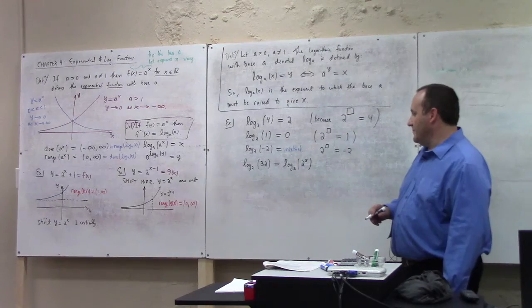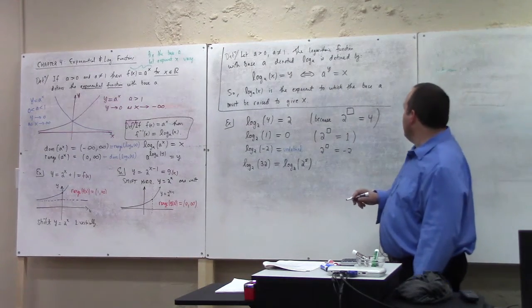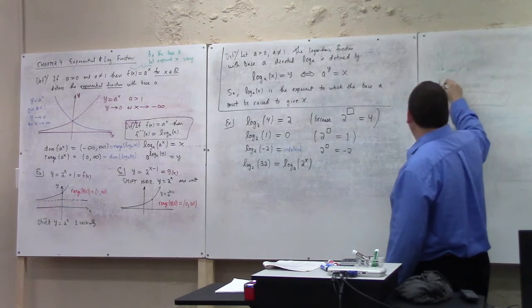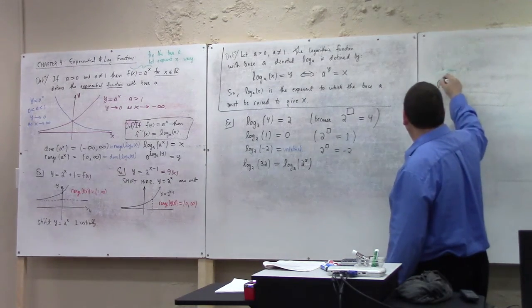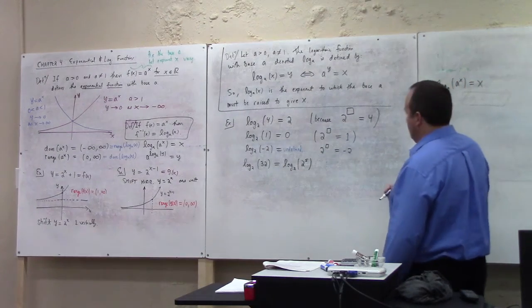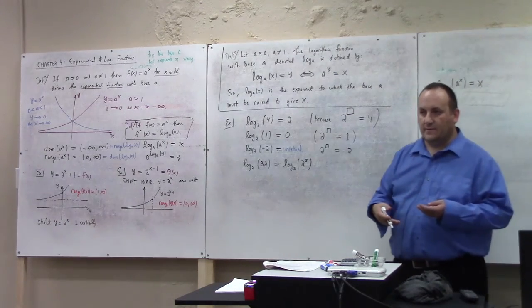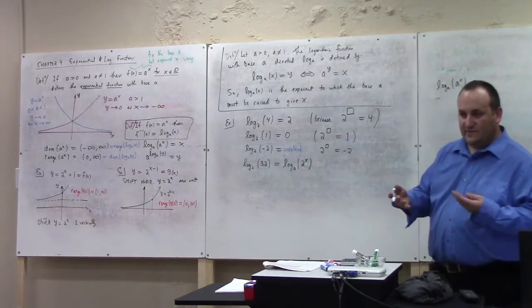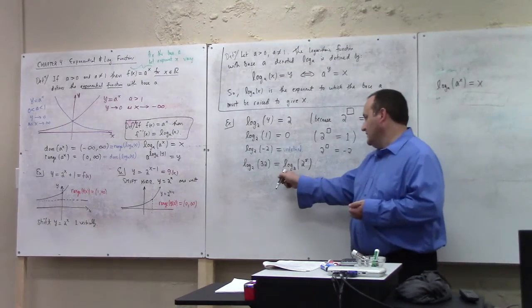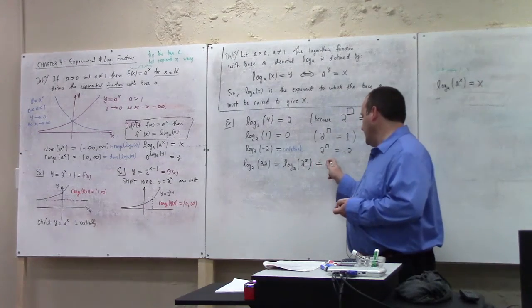So I would champion the formula log base a of a to the x is equal to x. So if you can rewrite the input to the logarithm as the base to a power then it's easy to calculate. I mean that's essentially all you got to do. See because log base 2 of 2 to the 5 is what? It's 5.